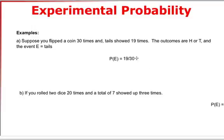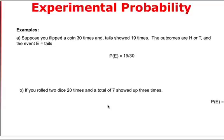If you rolled two dice twenty times, and a total of seven showed up three times, that means that the experimental probability of seven occurring is three over twenty, because seven was observed three times out of twenty trials.